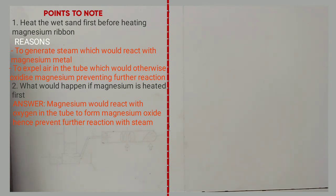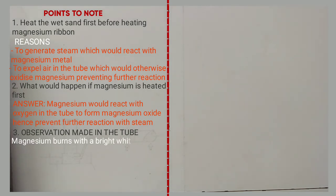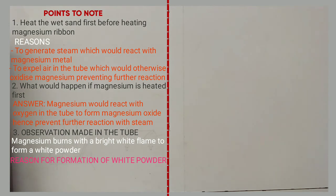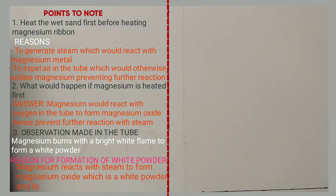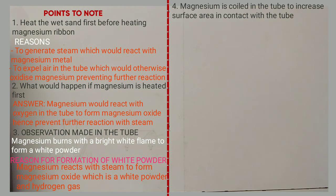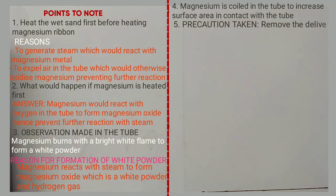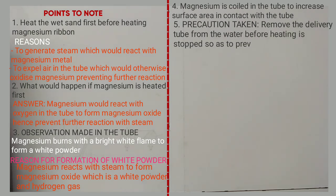Observation made in the tube: magnesium burns with a white flame to form a white powder. The reason for the formation of white powder is that magnesium reacts with steam to form magnesium oxide, which is a white powder. Magnesium is coiled so as to increase the surface area in contact with steam. Precaution at the end of the experiment: remove the delivery tube from the water before heating is stopped, to prevent sucking back of water into the tube and causing cracking.